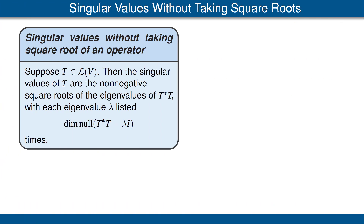Suppose T is an operator on V. Finding the singular values of T from the definition requires finding the operator the square root of T*T, and finding the positive square root of a positive operator can be a nontrivial task. Our next result simplifies this: the singular values of T are the non-negative square roots of the eigenvalues of T*T. In other words, using this result, we do not need to compute the square root of T*T directly.